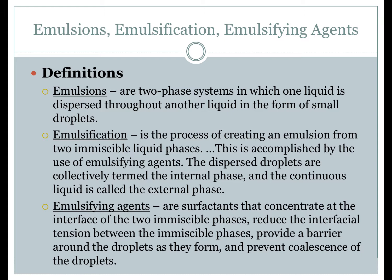The emulsifying agent causes one liquid to form small droplets — collectively called the internal phase — which become dispersed in the other liquid, called the external phase. The two liquids never solubilize; they do not join together. However, over time, several changes can occur. The first is creaming, defined as the migration of droplets of the internal phase to the top or bottom of the emulsion. Creaming is a normal change that occurs as emulsions stand for a period of time.